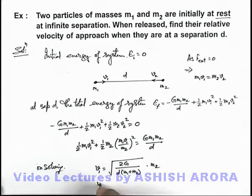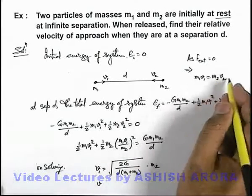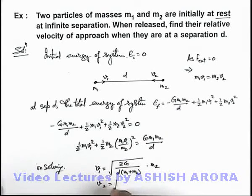Similarly, when we substitute this v1 here, we'll get the value of v2, which is root of 2G by d, m1 plus m2, multiplied by m1.